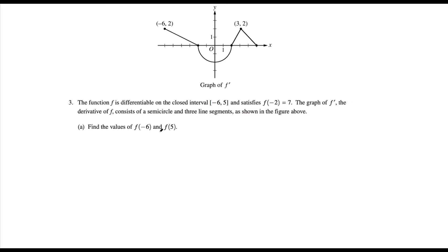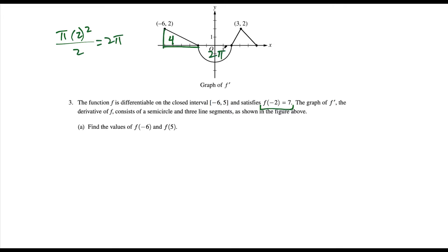For part A we want to find the value of f(-6) and f(5). We have a graph of f' and we're told that f(-2) = 7. For these questions we have to use the area under the curve, so I like to find the area under each piece ahead of time. This right triangle goes across 4 units and up 2 units: 4 times 2 divided by 2 gives area of 4 square units. Then we have a semicircle with radius 2: π times 2² divided by 2 is 2π. And then this triangle has base 3 and height 2, so ½ times 3 times 2 equals 3 square units. Having all of these areas in place makes questions like this easier.